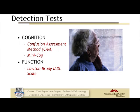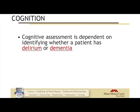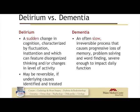Let's talk about the detection tests. We'll start with cognitive testing — the CAM and Mini-COG — then move on to the IADL scale. The key about cognitive assessment is we really need to figure out the timeline, and more importantly, whether the patient has delirium, dementia, or both.